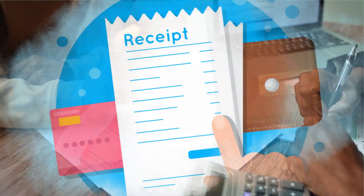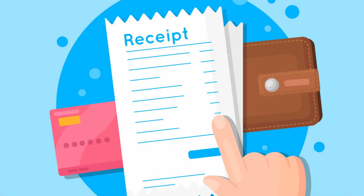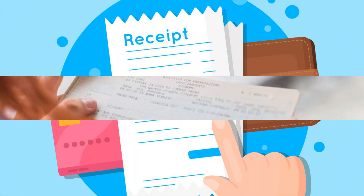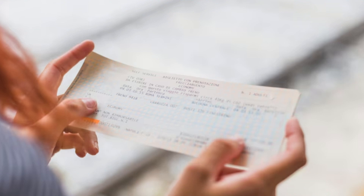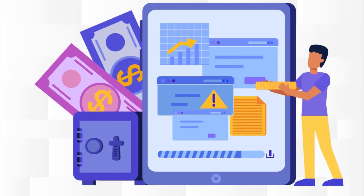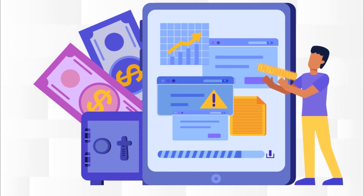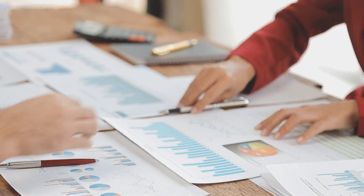Provide a copy of the receipt. If the dispute relates to a transaction processed on an account number not on the issuer's master file, provide a copy of the authorization log. If the account number on the dispute does not match the account number on your copy of the receipt, accept the dispute.